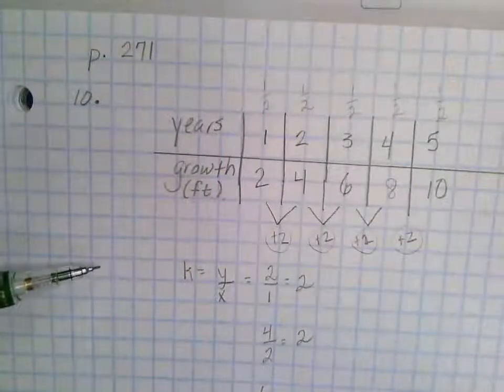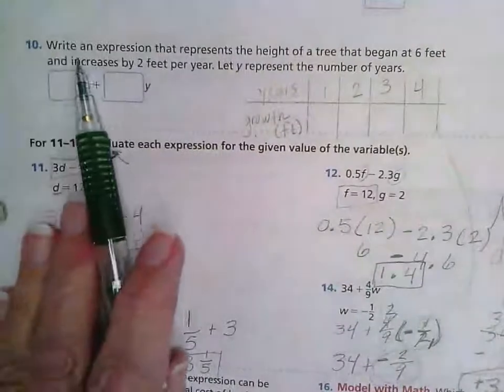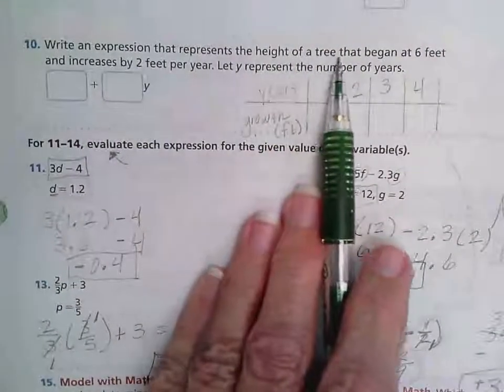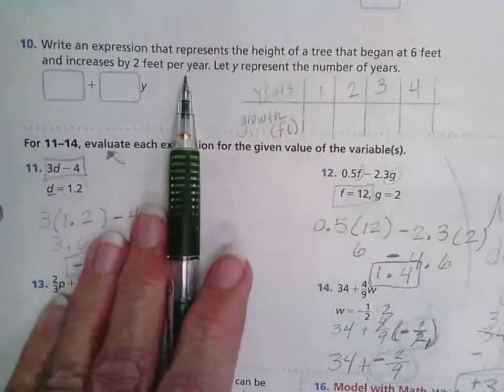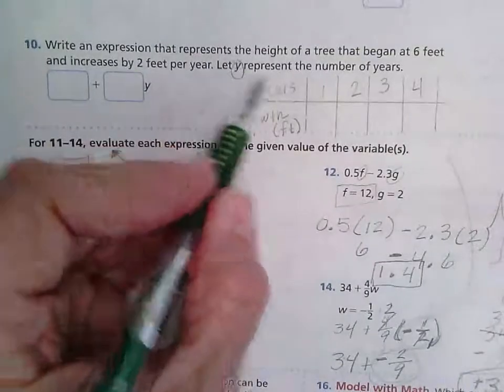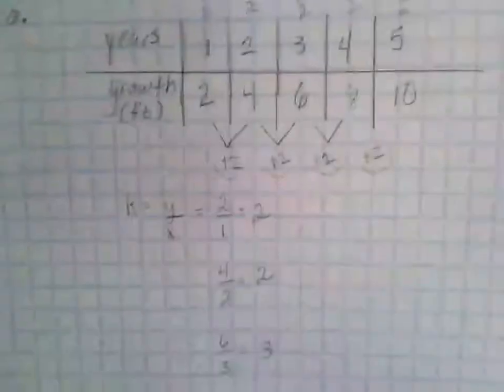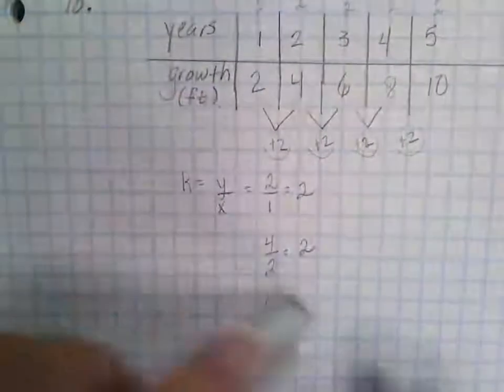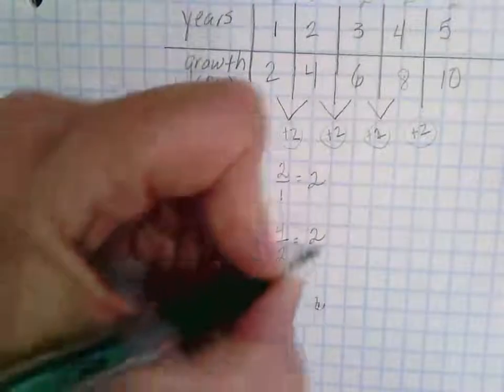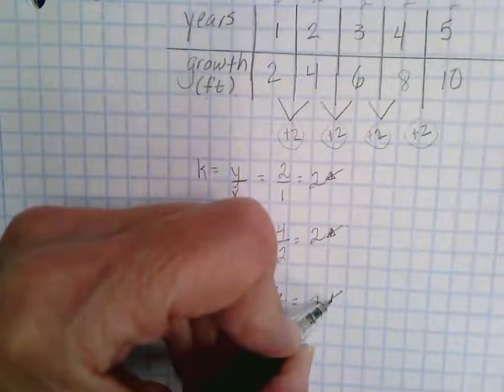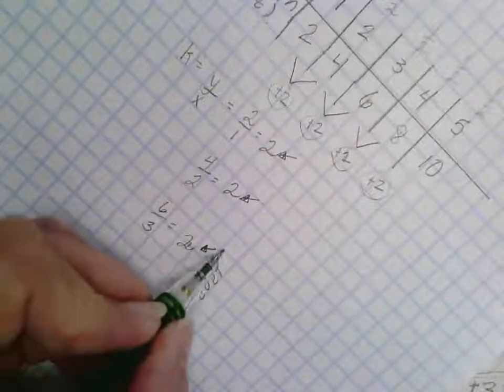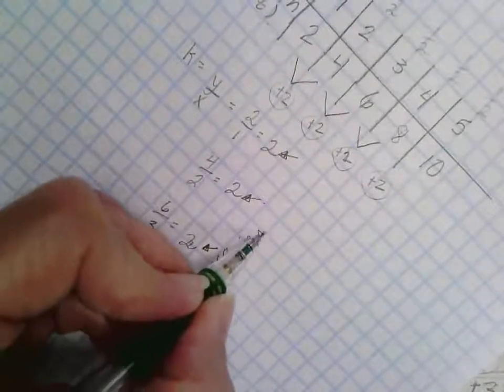The question asks us to write an expression that represents the height of the tree that began at six feet and increases by two feet per year. Let y represent the number of years. We also talked about yesterday that when I find this constant of proportionality it becomes my coefficient when I'm writing an expression for a situation.